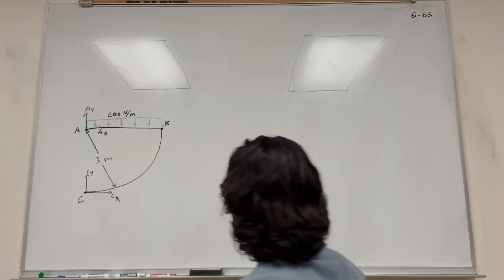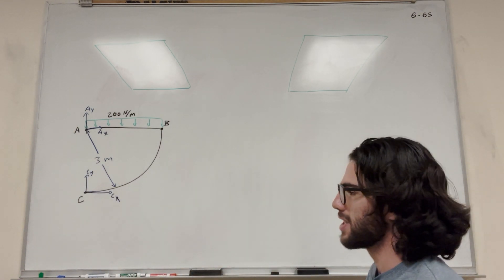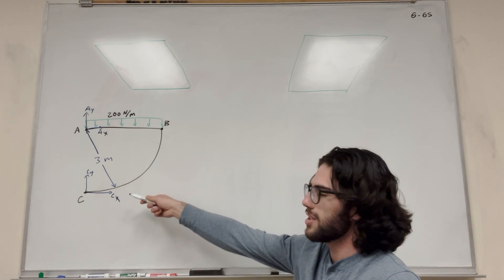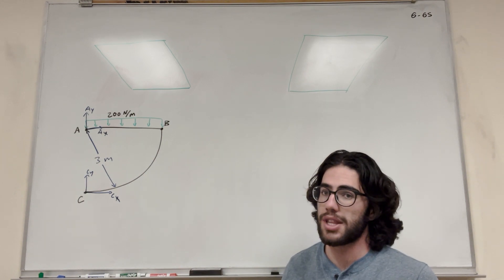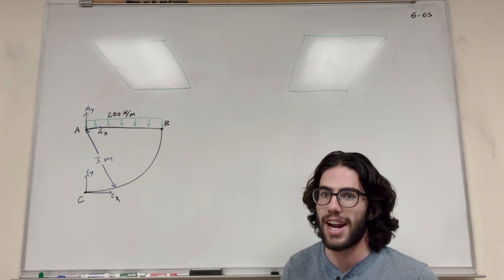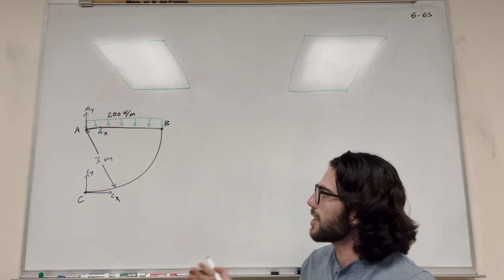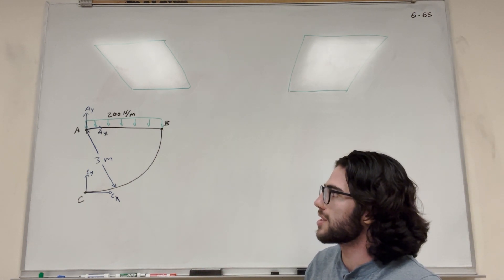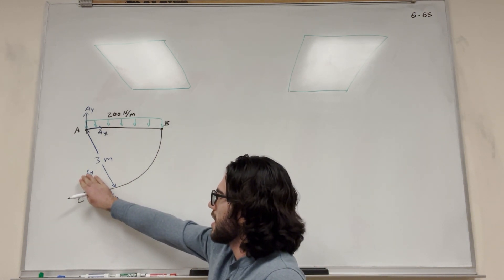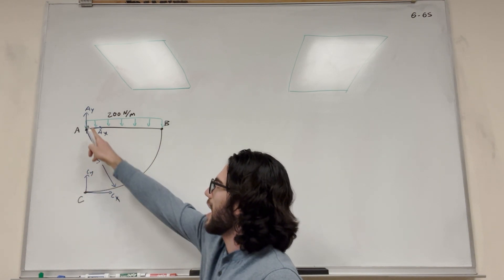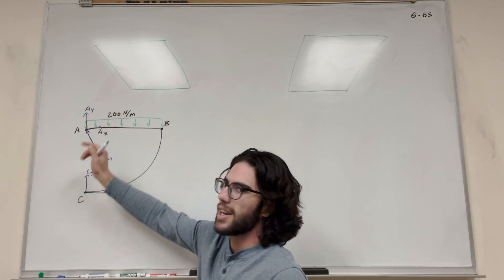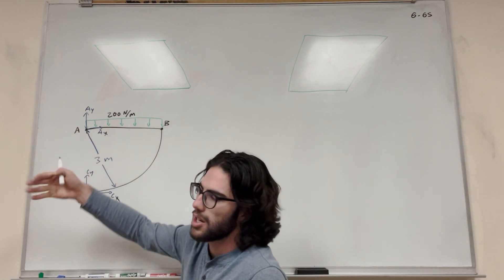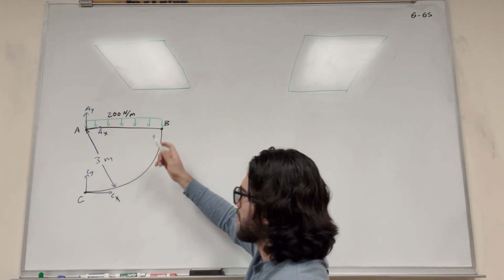The first thing we can do is take a moment around somewhere and find one of these forces. We have four forces and we can only do three equations, so we're going to need to do some shenanigans to figure it out. But first, we can take a moment and find two of the forces. If we take a moment at C, it gets rid of those two, and Ay won't cause a moment, so Ax is the only unknown left. So let's go ahead and do it at A to find Cx.